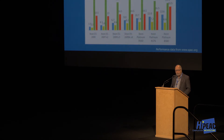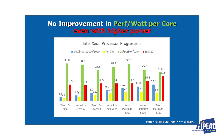Let's look at what happens if you're willing to increase the power. I took those same processors — Sandy Bridge, Ivy Bridge, Haswell, Broadwell, and Skylake — at the highest-power SKU. Initially they were all about 135 watts, then Haswell went up to 145 watts, that stayed with Broadwell, and then the highest-performance Skylake went to 205 watts.